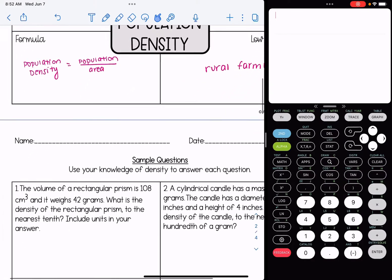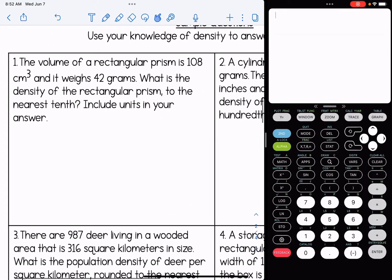All right, let's look at some sample questions. Number one: the volume of a rectangular prism is 108 centimeters cubed and it weighs 42 grams. What is the density of the rectangular prism to the nearest tenth? Include units in your answer. I know this is density, not population density, because of volume. Our formula is density equals mass over volume. We're looking for the density. The mass is 42 and the volume is 108. We're looking to the nearest tenth, so I divide these two values and get 0.4. But we have to think about our units. The mass unit is grams, the volume unit is centimeters cubed. So our density is 0.4 grams per centimeters cubed.